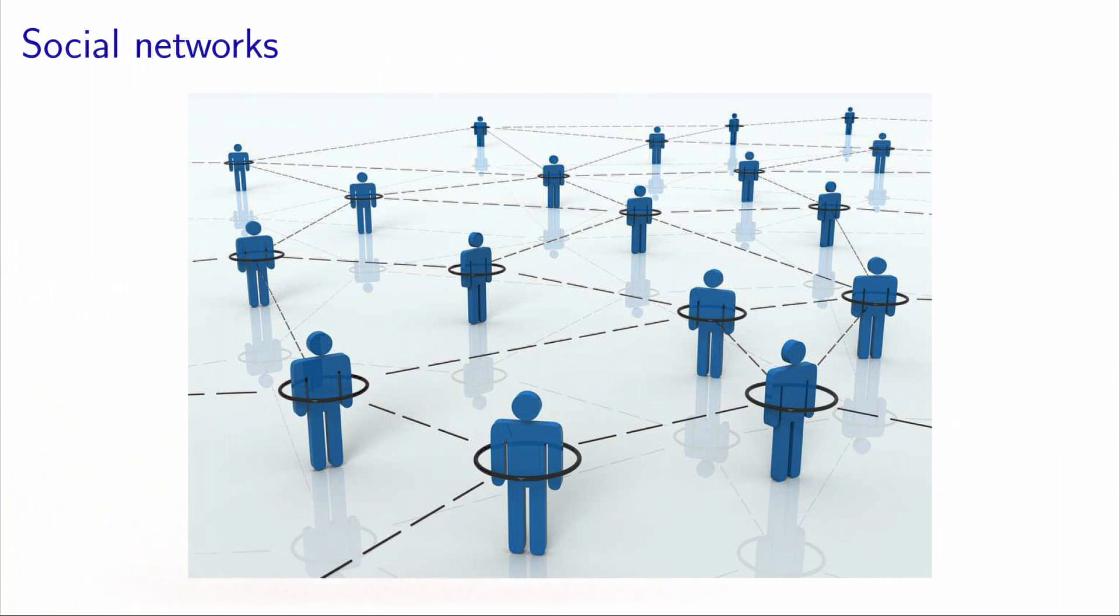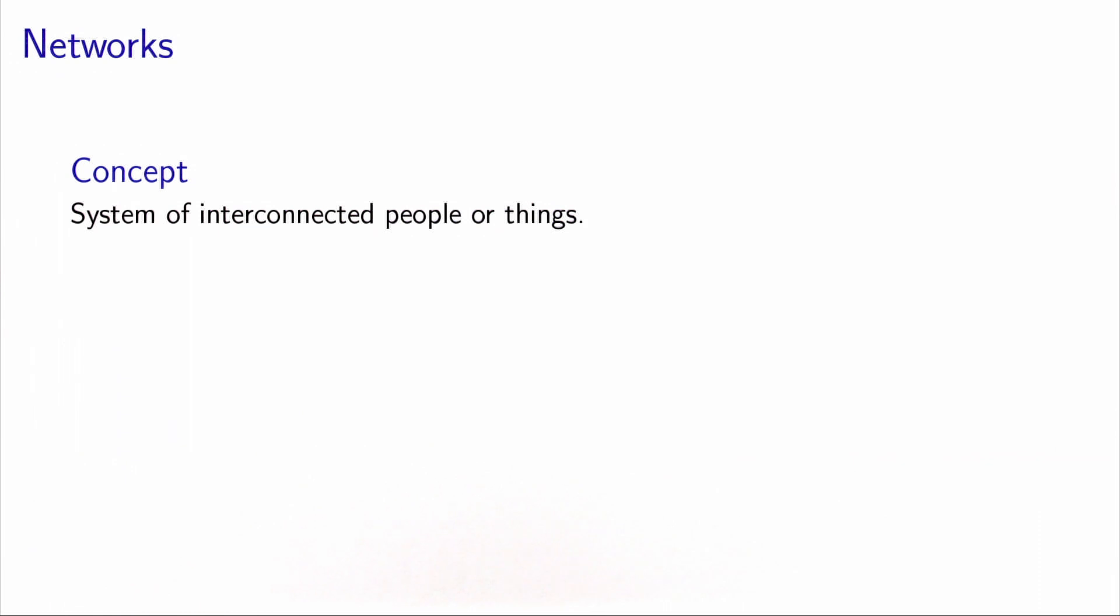Our society is built around social networks. What is the common property of all these networks? Typically, it is a system of interconnected people or things. The main features are that the local complexity is low and the global complexity is high.